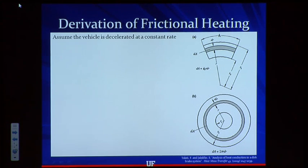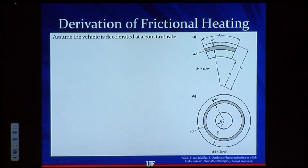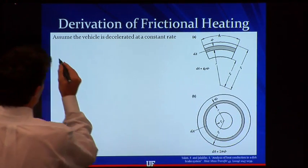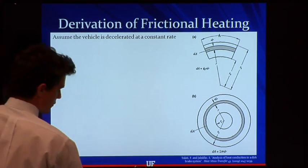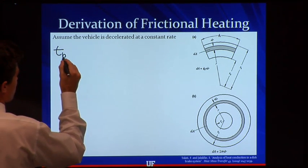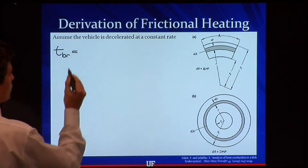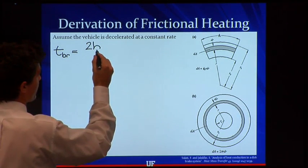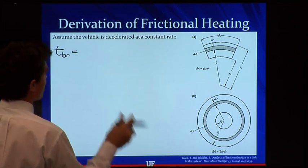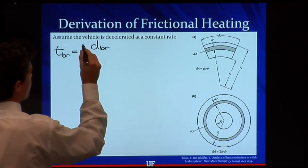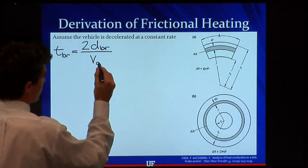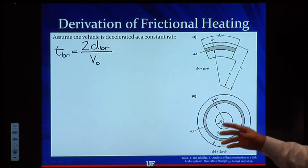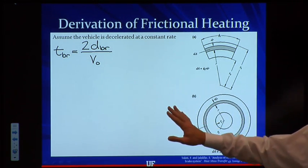If we assume the vehicle is decelerated at a constant rate, that's going to make our analysis simpler. The biggest thing is it gives us the amount of time that we're stomping on the brake. The time that it takes to brake, assuming constant deceleration, is equal to 2 times the brake distance d_Br over the initial velocity. Because the heating of these pads is a very transient process, we really need that value and we're going to be using it in our analysis.